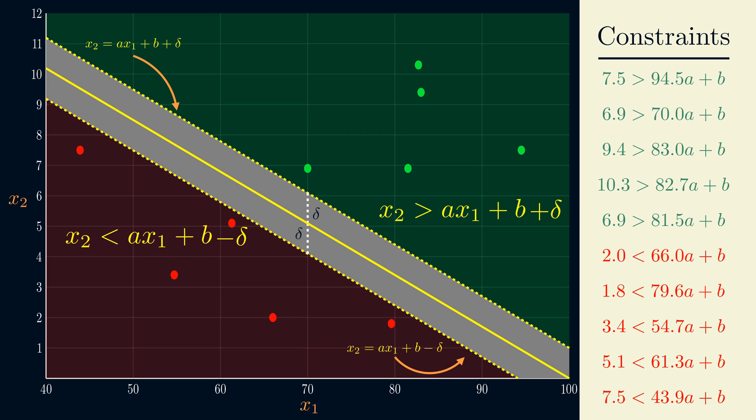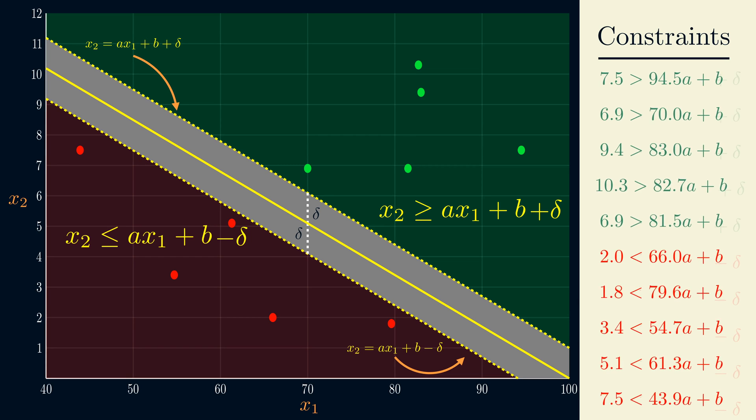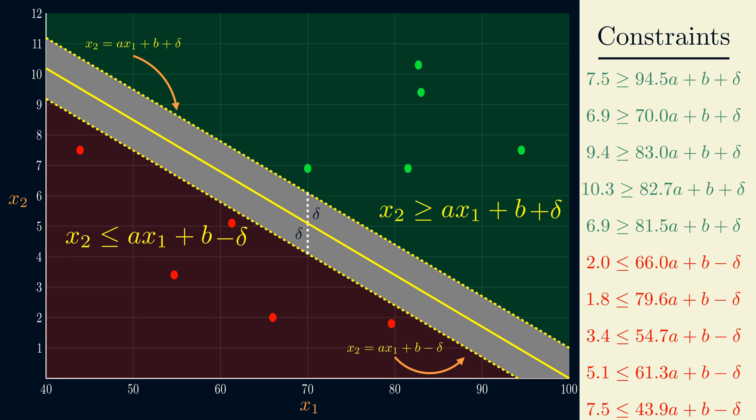The inequalities for the green and red areas are also shifted by delta. Because we now have a buffer, we can change our equations to have non-strict inequalities. If we can find A and B satisfying these new constraints, there will be a buffer of delta to all of our existing points.